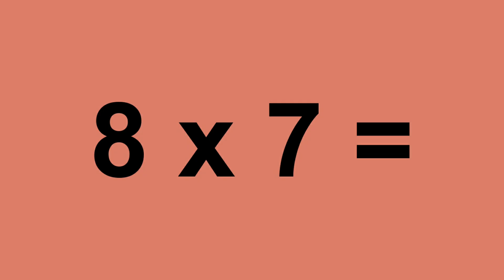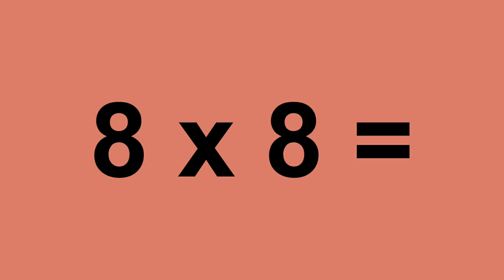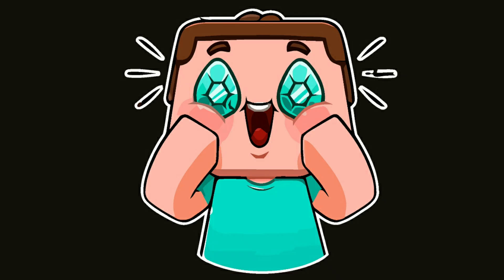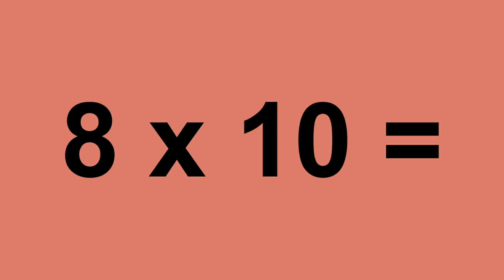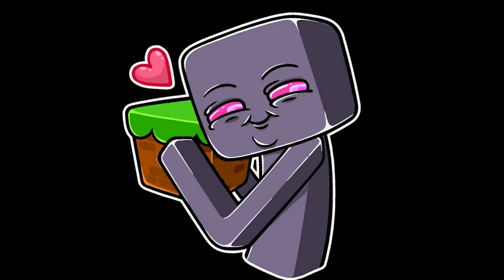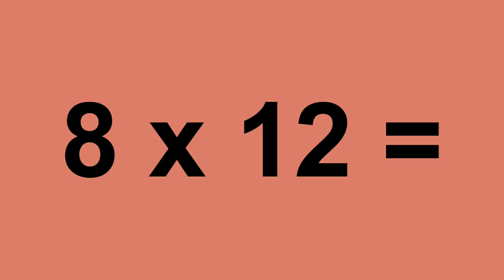8 times 7 equals 56. 8 times 8 equals 64. 8 times 9 equals 72. 8 times 10 equals 80. 8 times 11 equals 88. 8 times 12 equals 96.